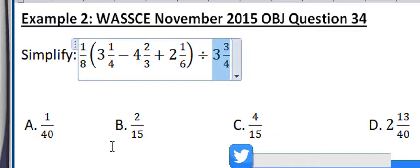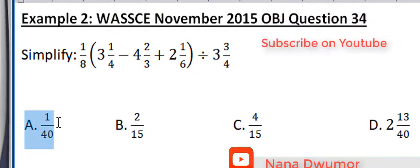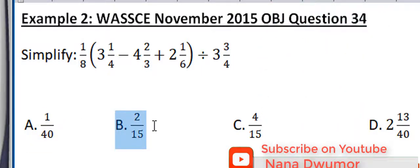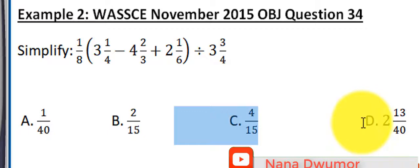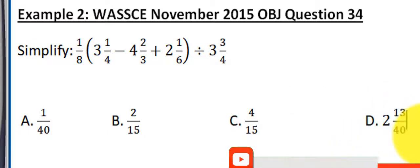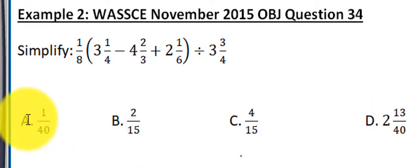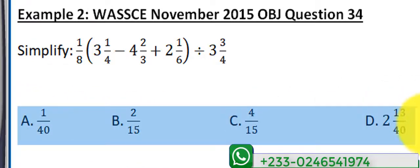These are the four options we have. A is 1/40, B is 2/15, C is 4/15, and D is 2 whole number 13/40. So which of these four options is the correct answer?